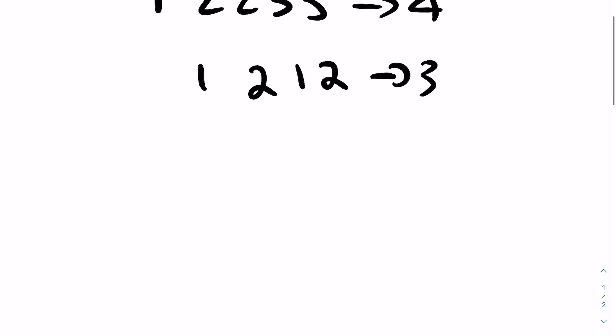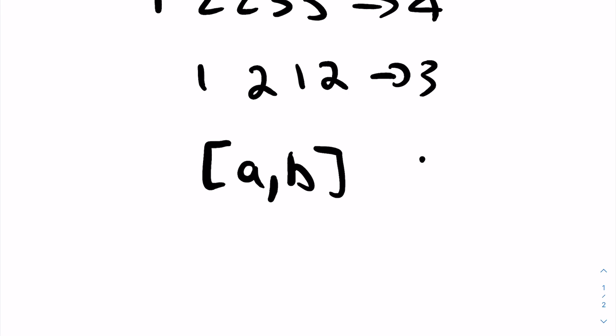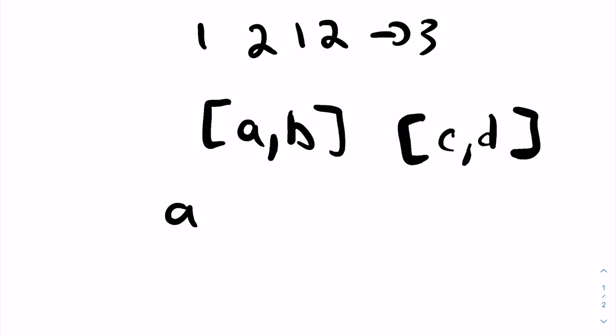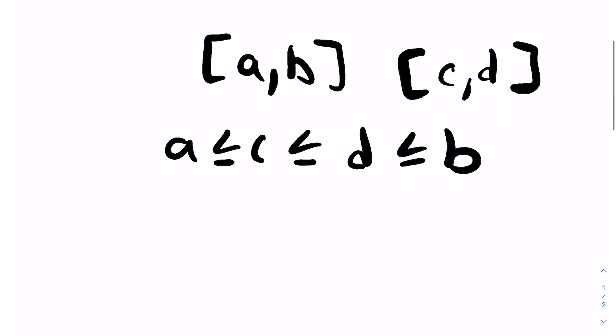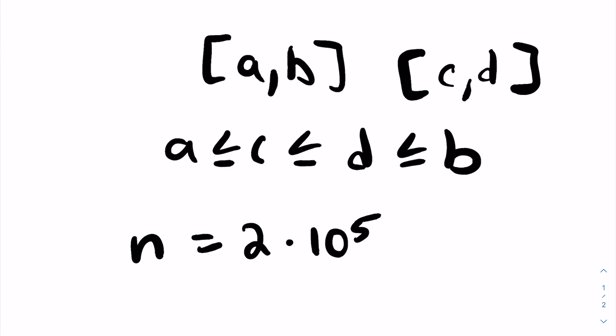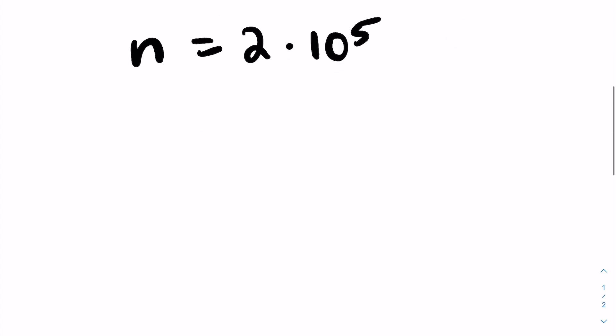Now let's make an observation in general. Say we have some range A–B and some other range C–D. Removing A–B includes removing C–D only when A ≤ C ≤ D ≤ B. Another observation is that n is at most 2×10^5, so we must find an algorithm that runs in at most O(N) or O(N log N) time.